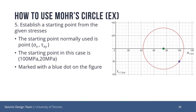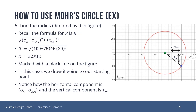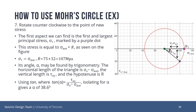Next, we must establish our starting point. In this case, our starting point is (sigma x, tau xy), or (100 MPa, 20 MPa), marked as a blue dot on the figure. Next, we may find the radius of the circle. Using the formula for radius, we get a radius of 32 MPa, marked by the black line. We can understand our formula better from the figure: notice how sigma x minus sigma average is the value for the horizontal component, and tau xy is the value for the vertical component of a right-angled triangle, where the hypotenuse is equal to our radius. We draw the radius going to our starting point, as previously shown.